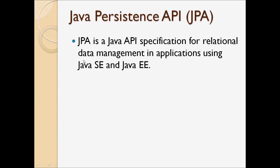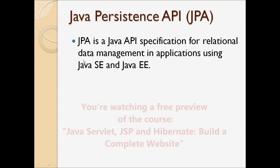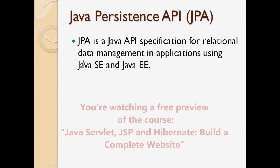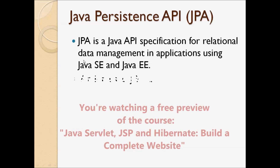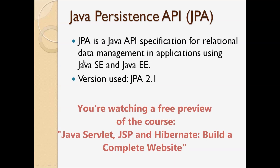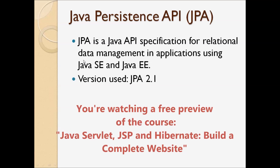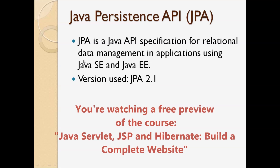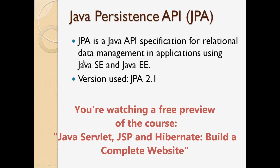JPA defines a standard way for simplifying database programming for developers, reducing development time and increasing productivity. The latest version of the JPA specification is 2.2.